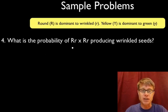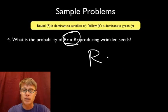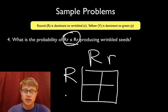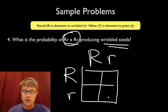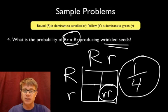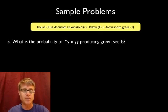Number four: what's the probability of this cross — two round seeds producing wrinkled seeds? Like I said before, if you ever get a simple monohybrid cross, do a Punnett square. Put big R and little r on one side, big R and little r on the other side. What are the odds of getting wrinkled seeds? There's a little r here and a little r here, so there would be a 1 in 4 probability of wrinkled seeds, because the other three combinations produce round.